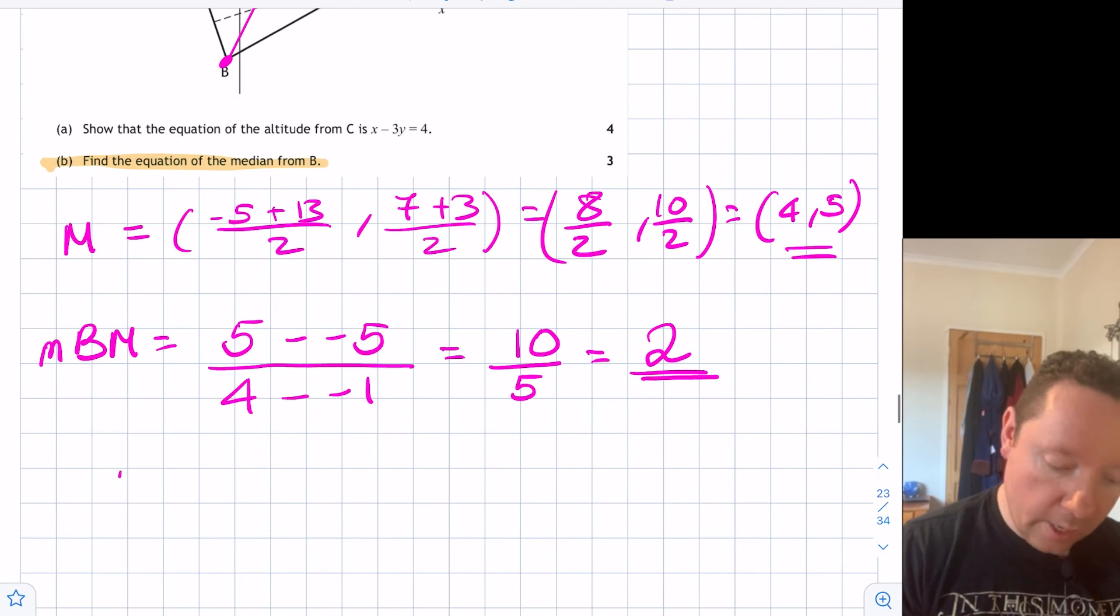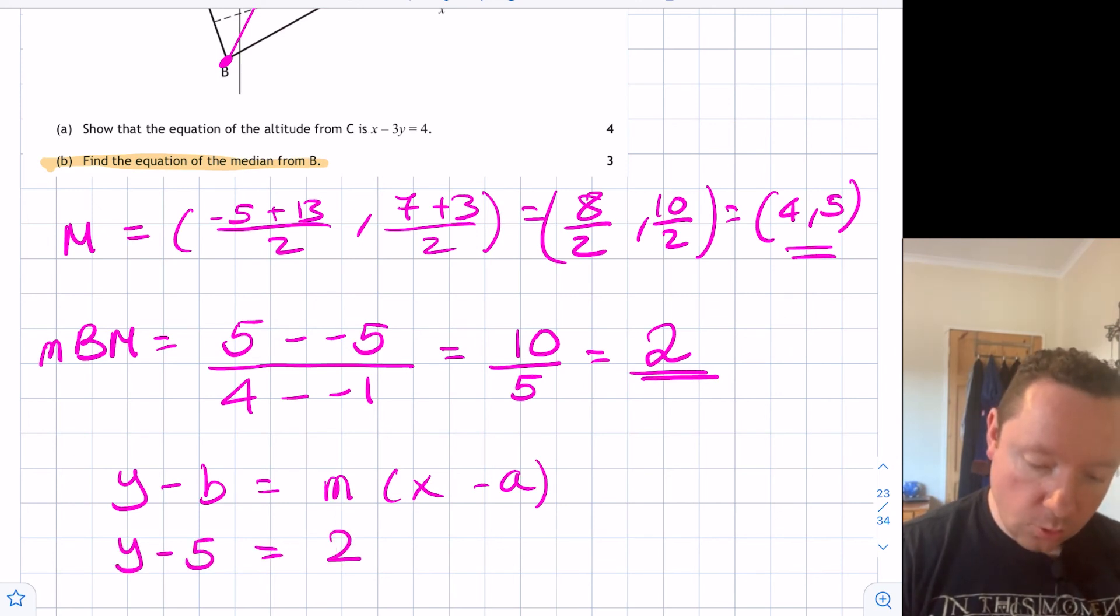So we can use y minus b equals m(x minus a). y minus 5 equals 2(x minus 4) using our point M which we just found out as our a and b.